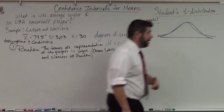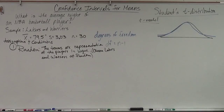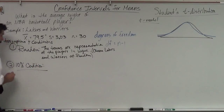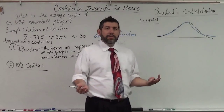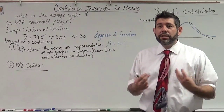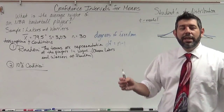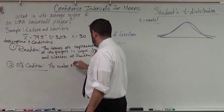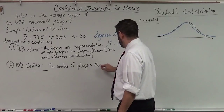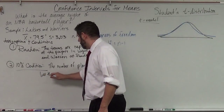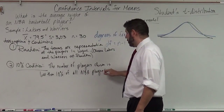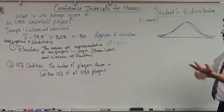Our second condition is the 10% condition. We know that if there are 15 people on a team, there are 30 people I have chosen — my n is 30. There are likely more than 300 individual players in the league. So the number of players chosen is less than 10% of all NBA players.